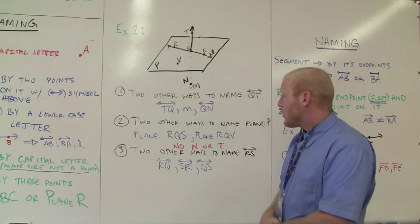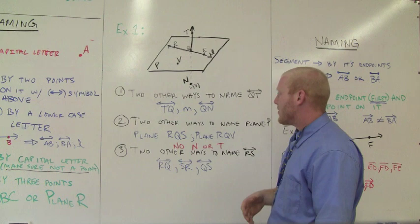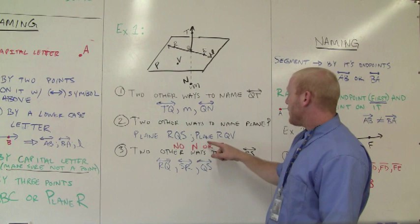For the next one, we have name two other ways to name plane P. If you can't see that, it's plane P. So that's this whole piece of paper here, that imaginary piece of paper we talked about. We can name it by three points, plane RQS or plane RQV.